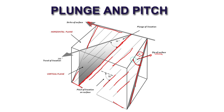The dip amount is measured with respect to a horizontal plane — this is an imaginary plane. Similarly, the plunge of this line is measured with respect to a horizontal. This angle comes out to be 50 degrees. It is less than 55 degrees because the dip amount is measured at right angles to the strike of this plane,